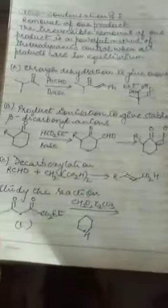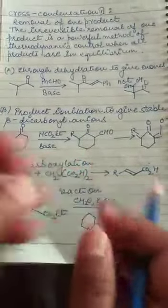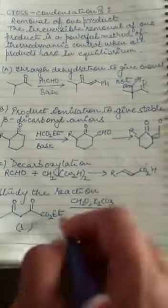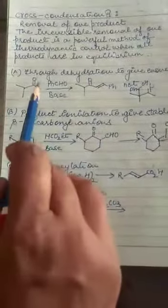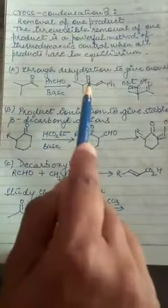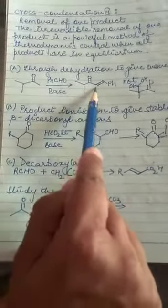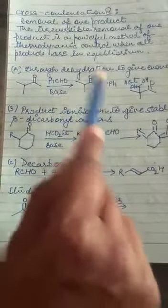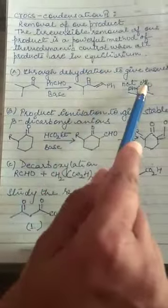So in this way the enamines can be used as the enol equivalents. The last method to have the control in the carbonyl condensation is the cross condensation. Third technique we can call it. Here what do we do? We remove one product. The irreversible removal of one product is a powerful method. And this gives us the thermodynamic control over the reaction. How can we do this? Through dehydration to give the enones. We also read the aldol condensation.